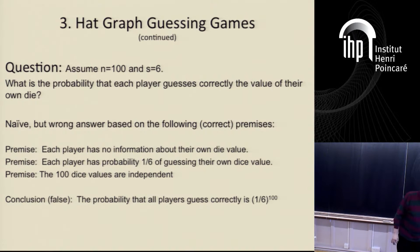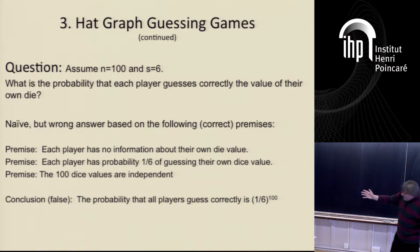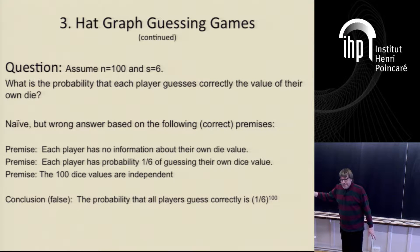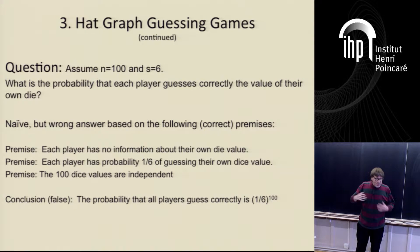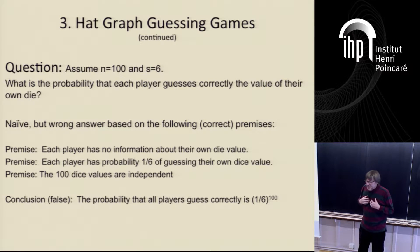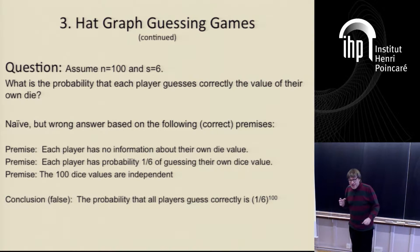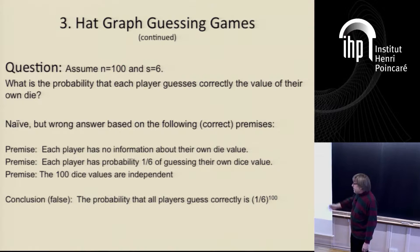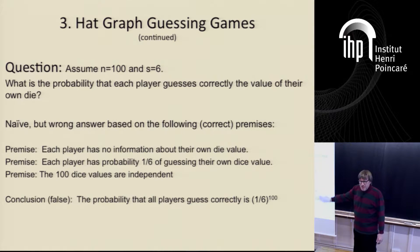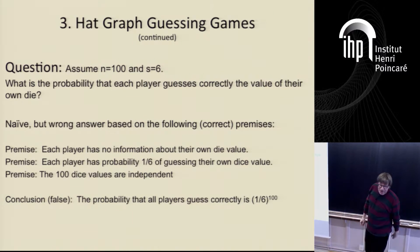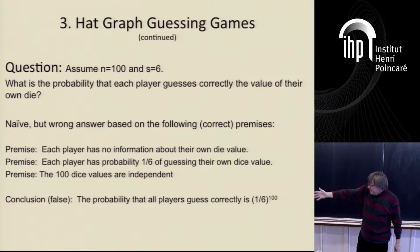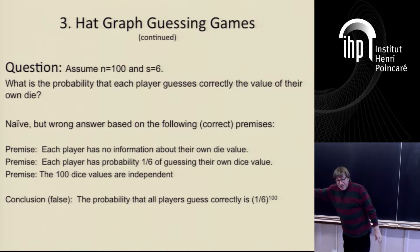Every time I give this talk it's interesting — in some audiences nobody notices, but in the maths department, immediately people say there's a mistake. So let's check the argument. The premise that each player has no relevant information about their own die is correct. You learn absolutely nothing about your own die value by looking at the others. And it's correct that you have a one-sixth probability of guessing your own value — you cannot change that.